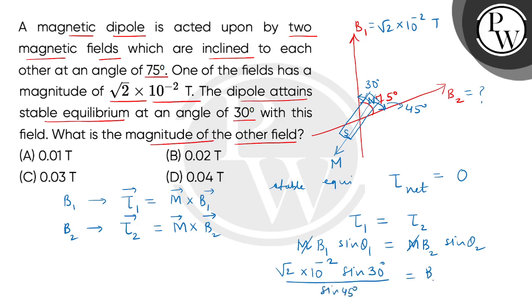So this will be B2. When we solve this, sin of 45 degrees is 1 over square root of 2, and then we get 2 multiplied by 10 to the power minus 2 multiplied by sin 30 degrees, which is 1 by 2.